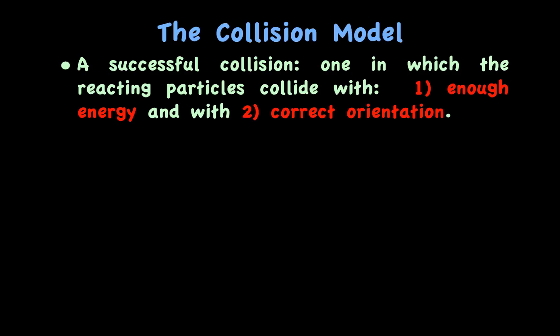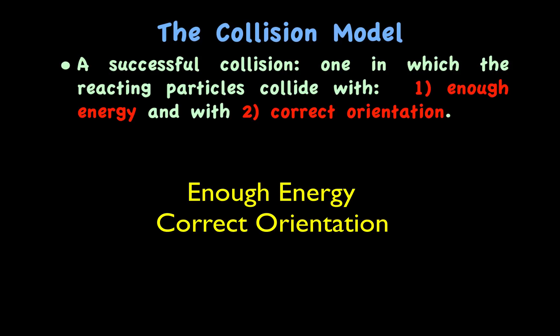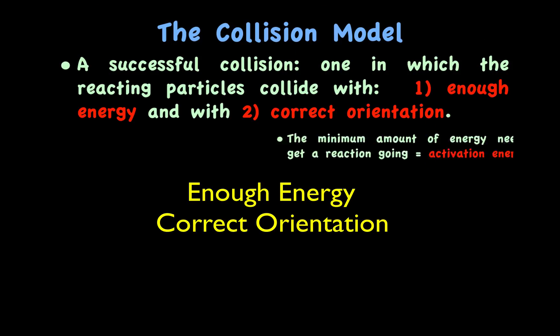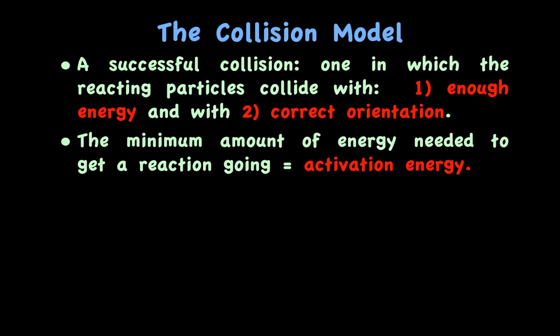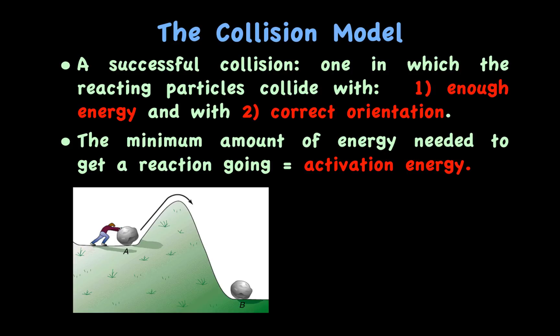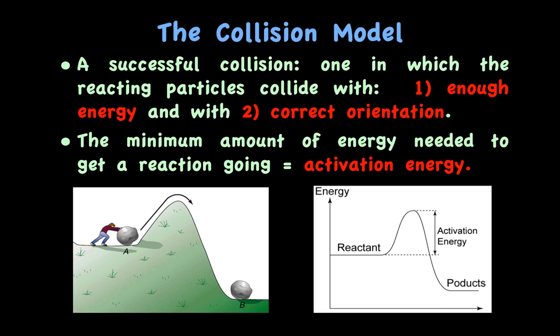A successful collision is one in which the reacting particles collide with enough energy and with correct orientation. The minimum amount of energy needed to get a reaction going is called the activation energy. The person in this diagram has to expend a certain amount of energy to get the rock to the top of the hill so it can finally go down to position B — very similar to a potential energy diagram, where the reactant must have a certain amount of energy before it can be changed into products.